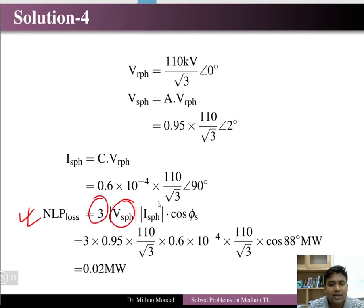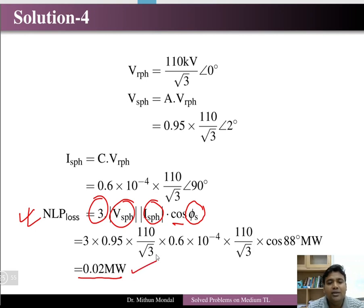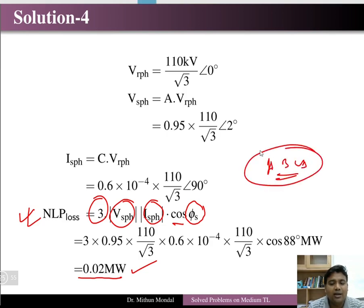Substituting the values, the no-load power loss equals 0.02 megawatt. This is how we calculate the no-load power loss for a medium length transmission line using ABCD parameters when the receiving end current is zero.